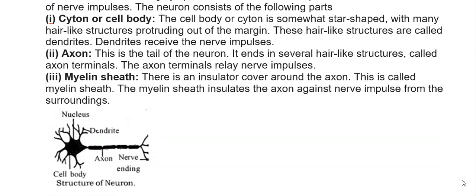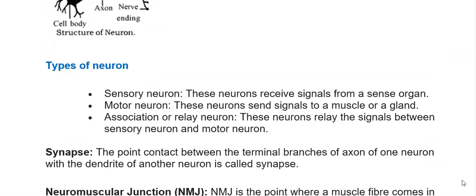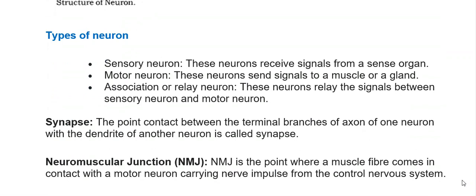Types of neurons: Sensory neurons receive signals from a sense organ. Motor neurons send signals to a muscle or a gland. Association or relay neurons relay signals between sensory neurons and motor neurons.